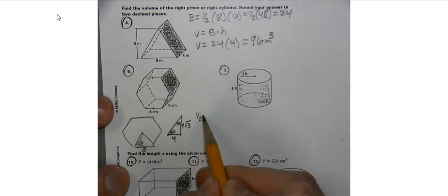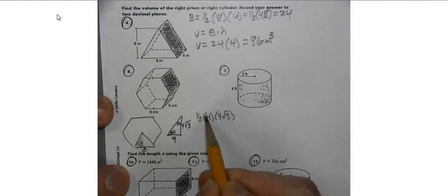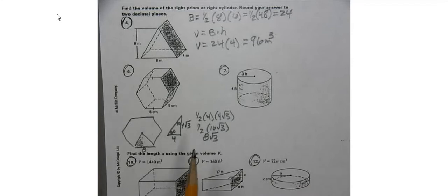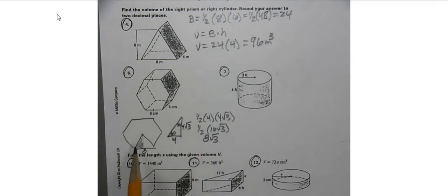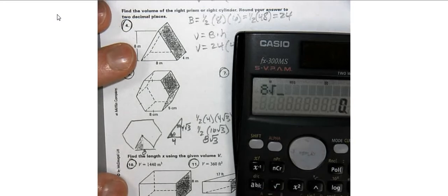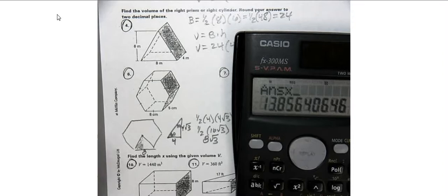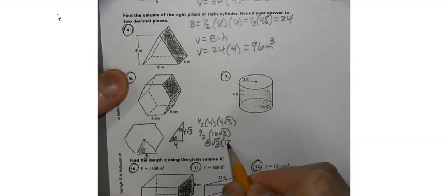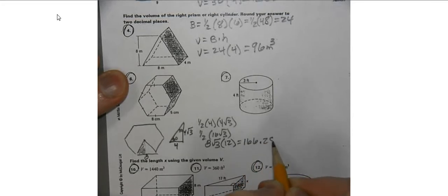We can find the area of this triangle by saying half of 4 times 4 root 3, which gives us half of 16 root 3, which is 8 root 3. That's the area of one triangle of the base. Using our calculator, 8 root 3 appears 12 different times all the way around the hexagon, so we get a total area of 166.28.